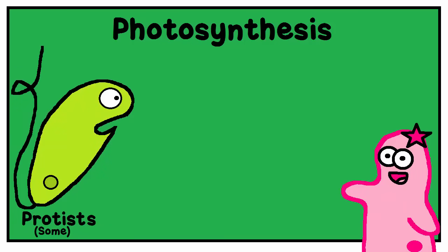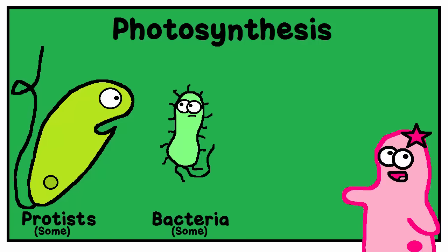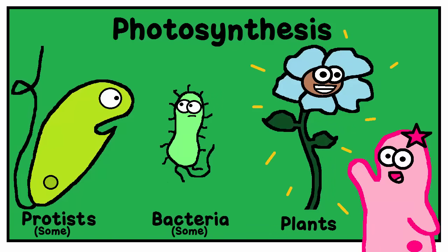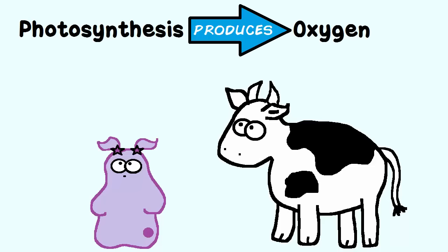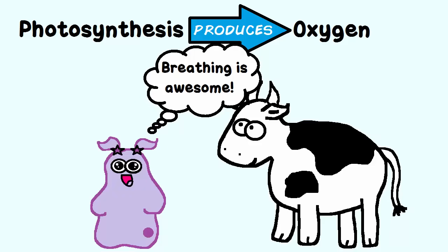Some types of protists can do photosynthesis, some types of bacteria can, and of course plants can. Plants will be our focus for this video clip. Animals and amoebas just sort of missed out on this ability. But we do benefit from it greatly as this process also produces oxygen, the very gas that we need in order to breathe. So this process is important for us to understand.